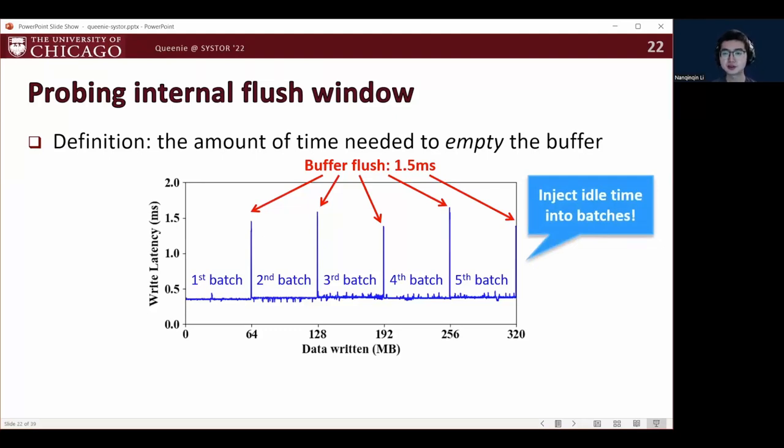The idea for probing the internal flush window is to simply sparsify the sequential write workload by injecting idle time between whites. And we should be able to see the latency spike gradually disappears as we increase the idle time.